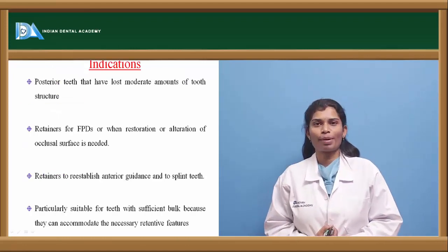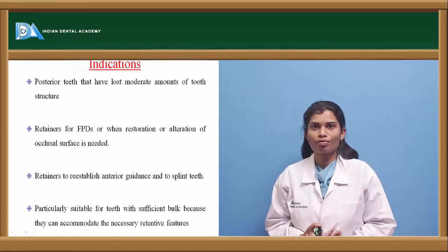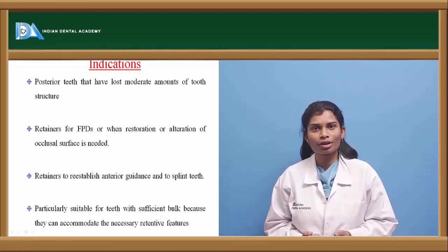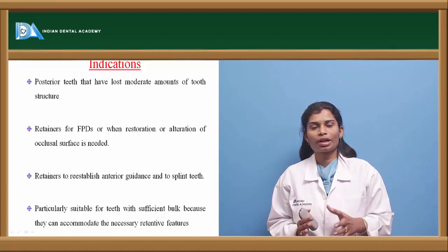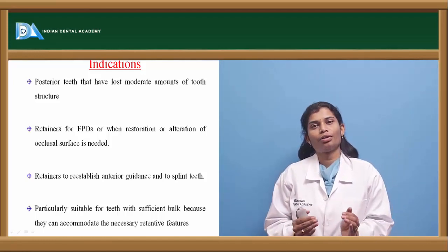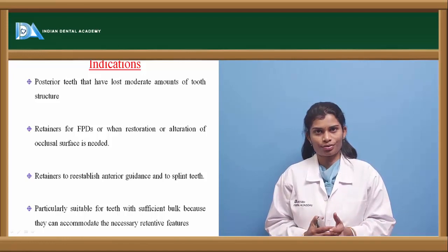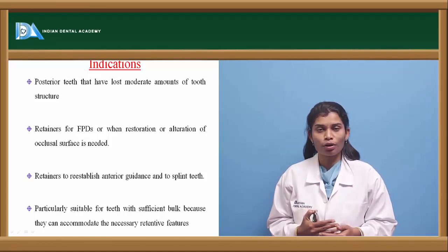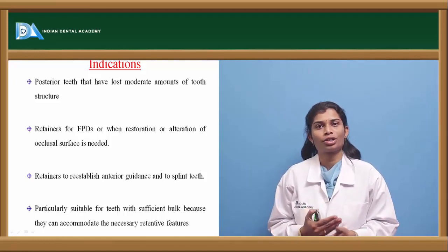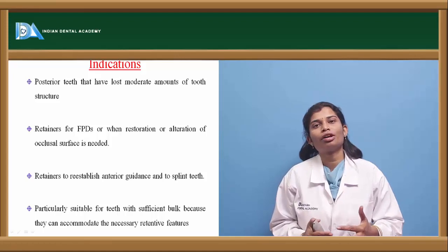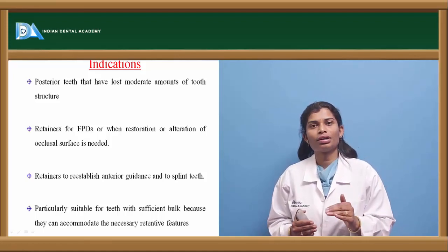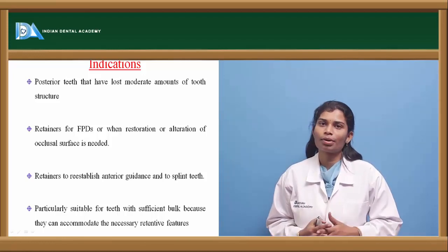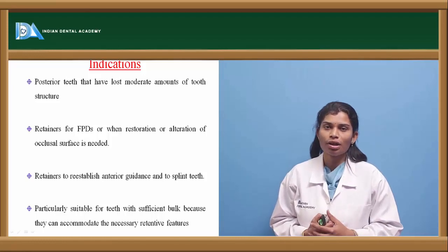Indications of partial veneer crowns: In posterior teeth with good to moderate amount of tooth structure, you can preserve remaining tooth structure and cover only the destructed portion. If you need to use a tooth as a retainer for a small FPD or if occlusal correction is required, you can leave some axial structure intact, cover the occlusal surface and some proximal surfaces for retention. Such crowns serve as good retainers for short-span FPDs.